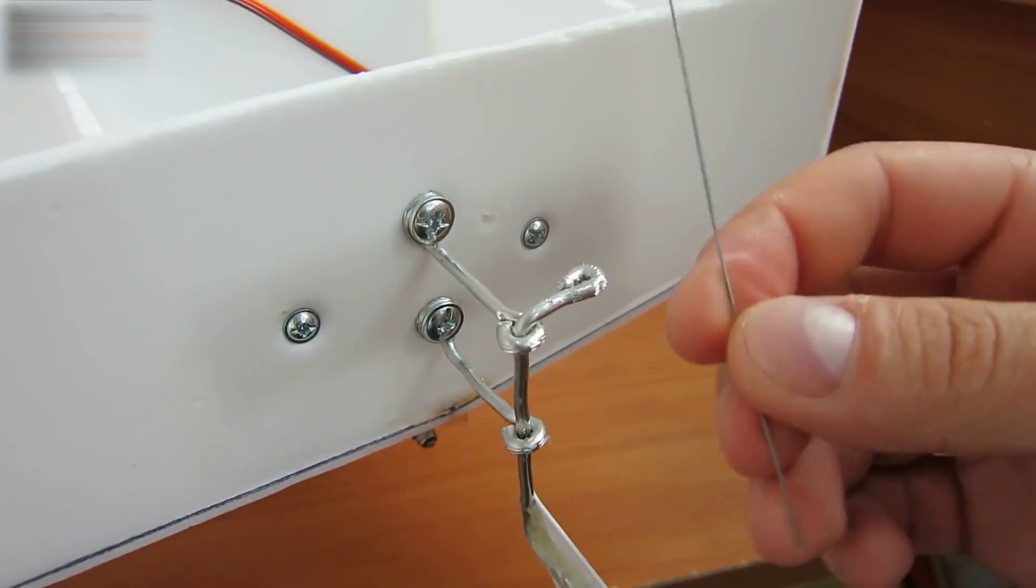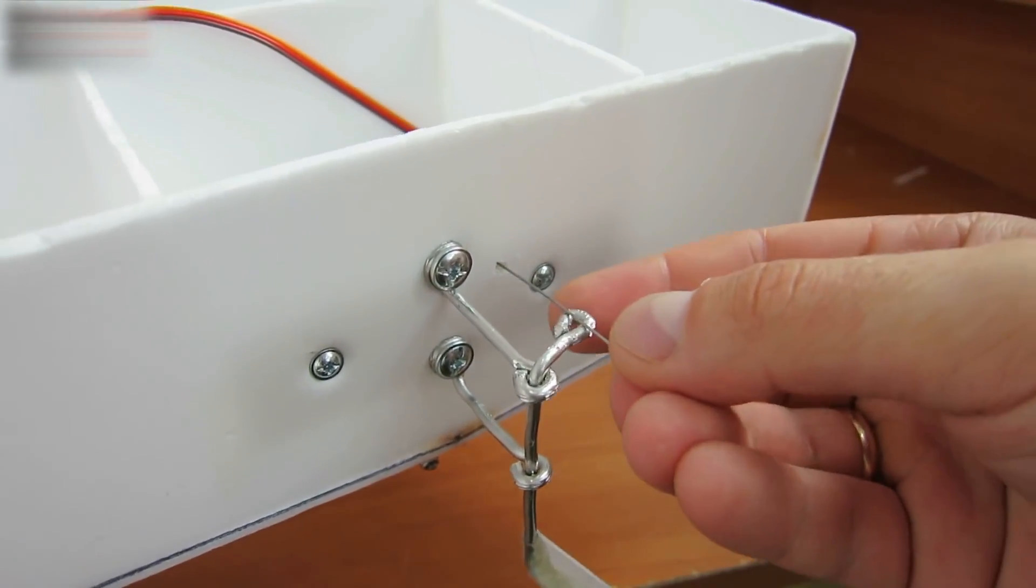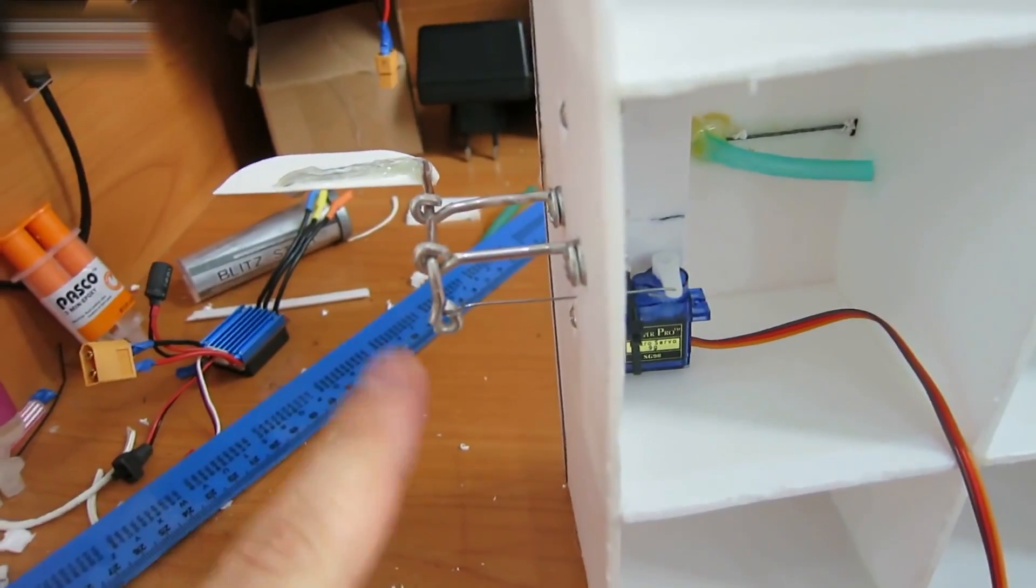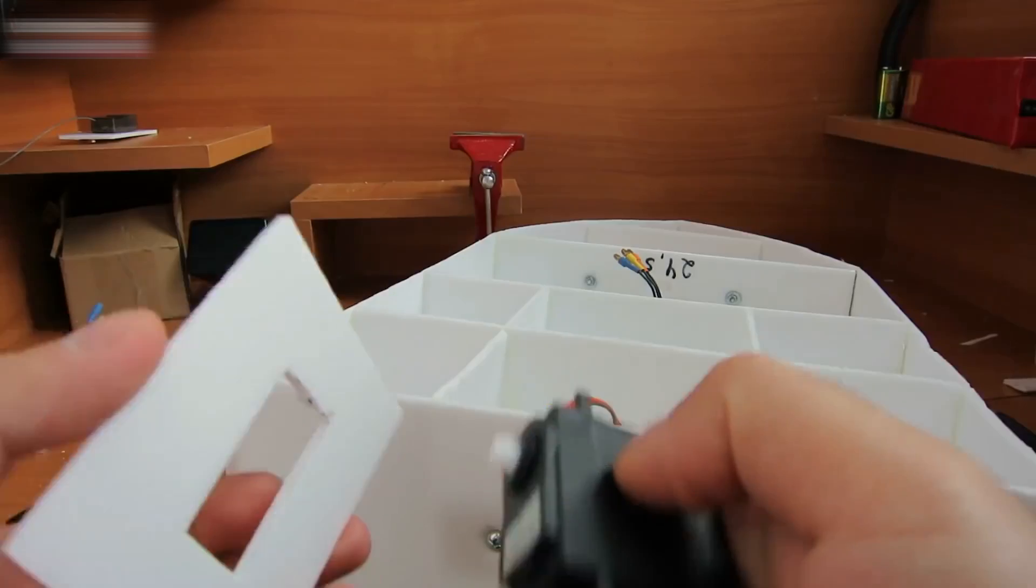Take a piece of thin steel wire. Push it through the hole and attach it to the servo and the rotation system with the two rings.